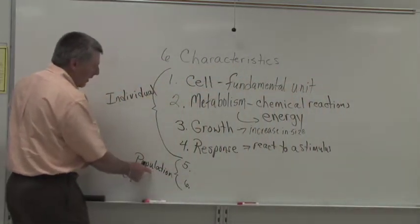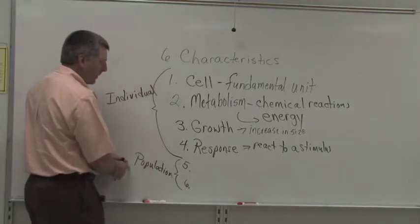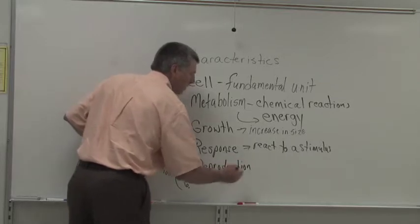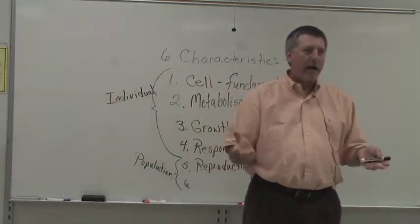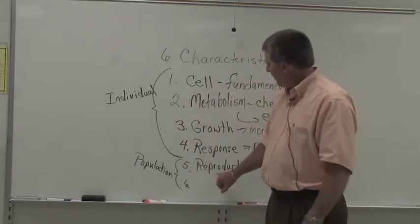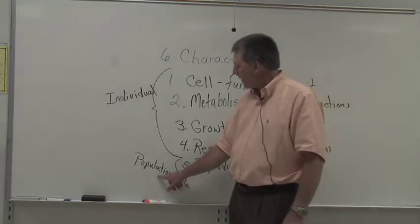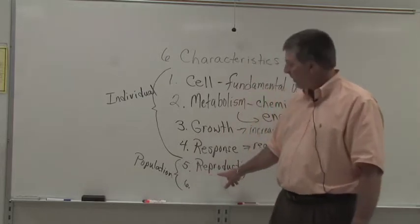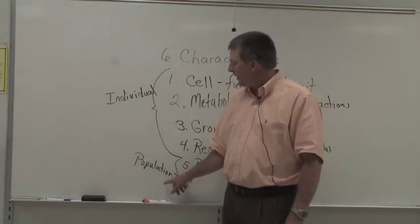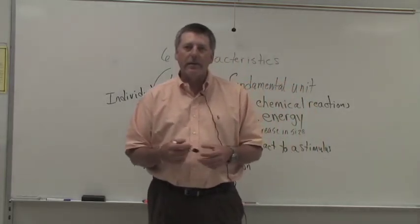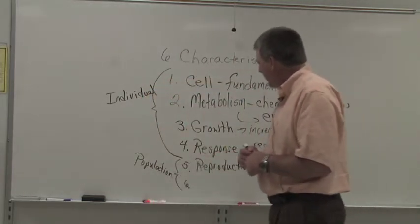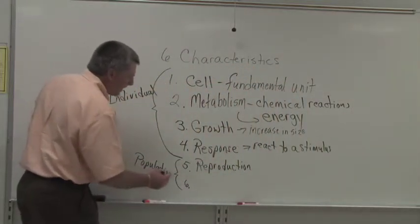When we look at characteristics of life on a population level, we talk about reproduction. Many of you may have family members in their 70s or 80s who've never had children, but they've certainly been living. I've produced no offspring myself, but I'm certainly alive. However, if all the members of a given population ceased to reproduce, that population would go extinct. If flathead catfish in the Yadkin River ceased reproduction, at some point there would be no more flathead catfish left there. So reproduction is the fifth characteristic of life.